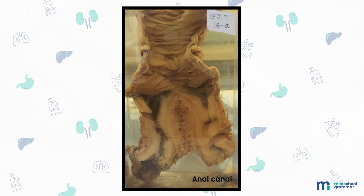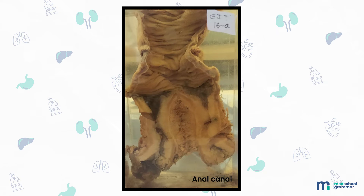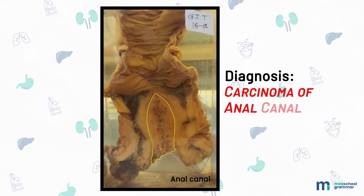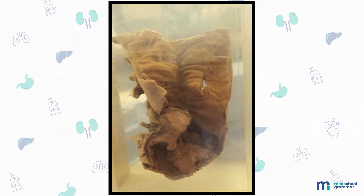Next we have a specimen of a segment of the anal canal along with the lower part of the rectum, measuring 20 centimeters in length. The external surface shows areas of hemorrhage. The mucosal surface shows a diffuse infiltrating growth measuring about 6 by 2 centimeters, arising from the anal region and extending up to the rectum, encircling the lumen. The growth is white, homogeneous, with a few areas of hemorrhage, and no lymph nodes are seen. Diagnosis: this is a specimen of carcinoma of the anal canal.